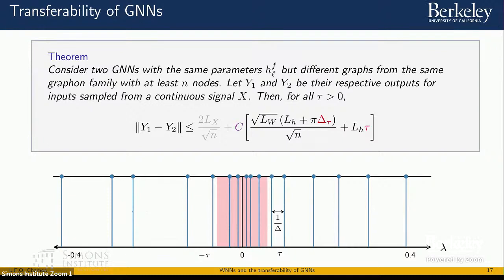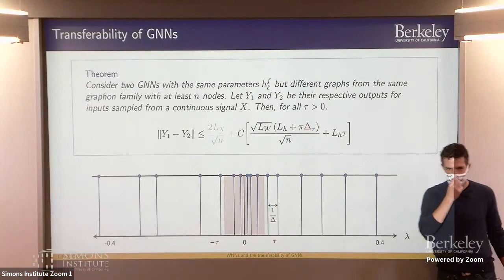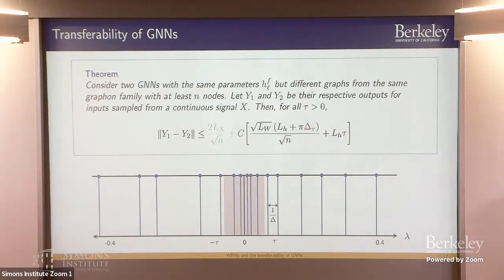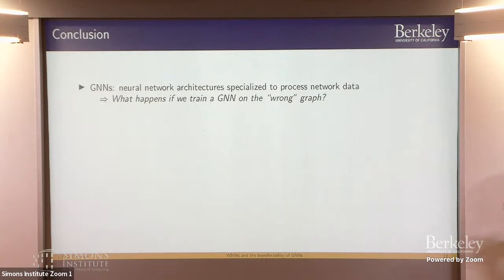An audience member clarifies: the trade-off is only from the proof, not a tunable method parameter. The speaker confirms: you can optimize the bound over tau, but it's a problem-specific guarantee. Asymptotically, you can take tau to zero and remove the bound, but the rate at which you should do that depends on spectral properties of the graphon.